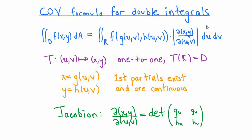Here's the formula one more time with the relevant hypotheses and with the definition of the Jacobian determinant at the bottom. Just to reiterate: when you make a substitution x equals g of uv and y equals h of uv, there are three things that change — number one, the integrand; number two, the differential; and number three, the region of integration.